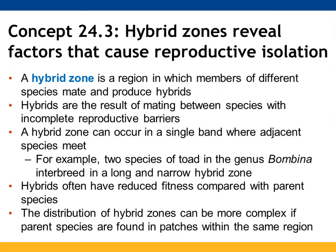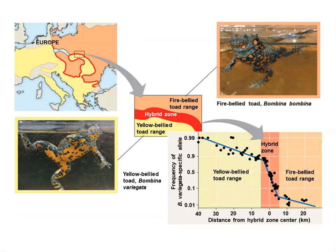Hybrid zones help identify factors that can lead to reproductive isolation. Hybrid zones are areas where members of different species mate and produce hybrids. Those hybrids can form because reproductive barriers are not complete. Hybrid zones can occur in a single band where species meet — we see this with toads, where there is a fairly long and narrow hybrid zone. These hybrids typically have reduced fitness compared to their parent species. Here you can see the hybrid zone between yellow-bellied and fire-bellied toads and the changes in allele frequencies across that zone.